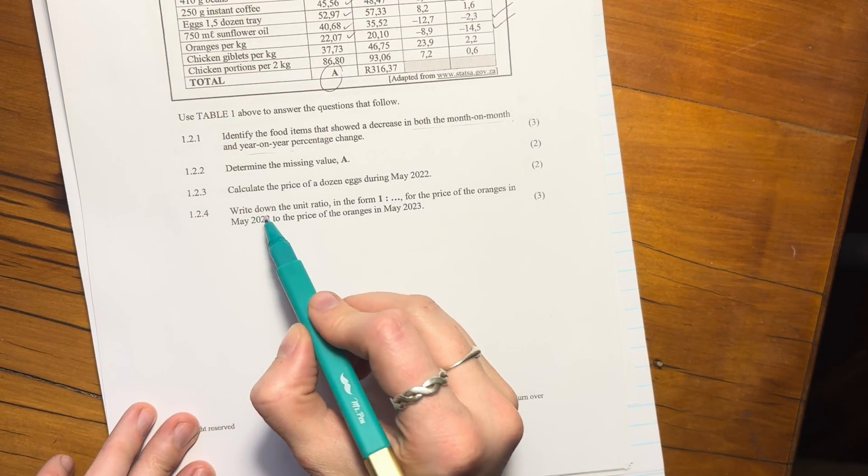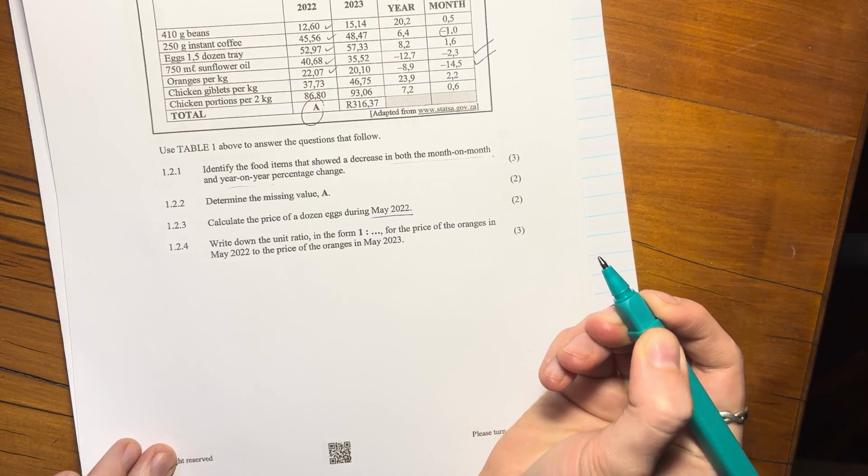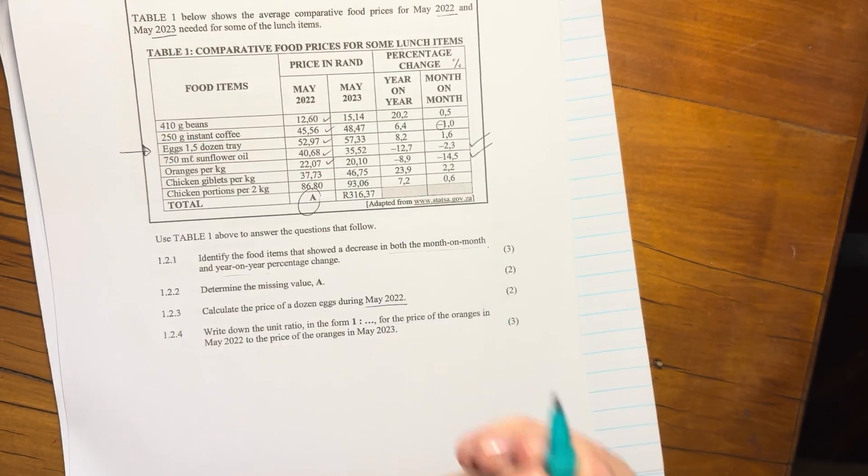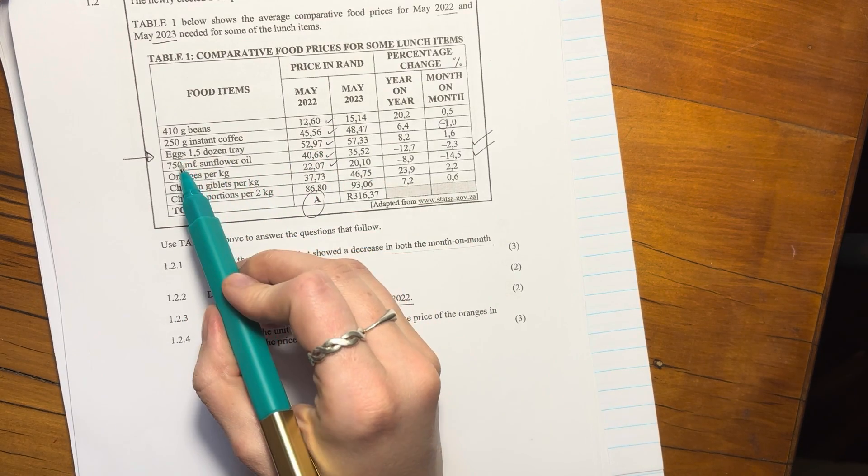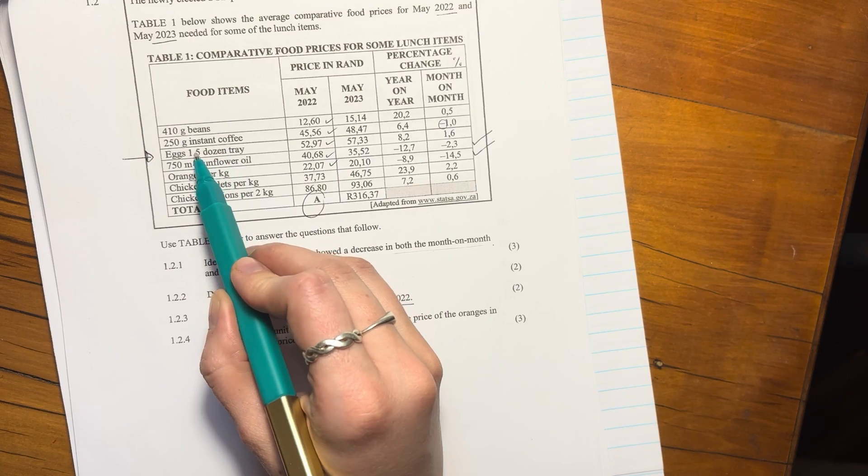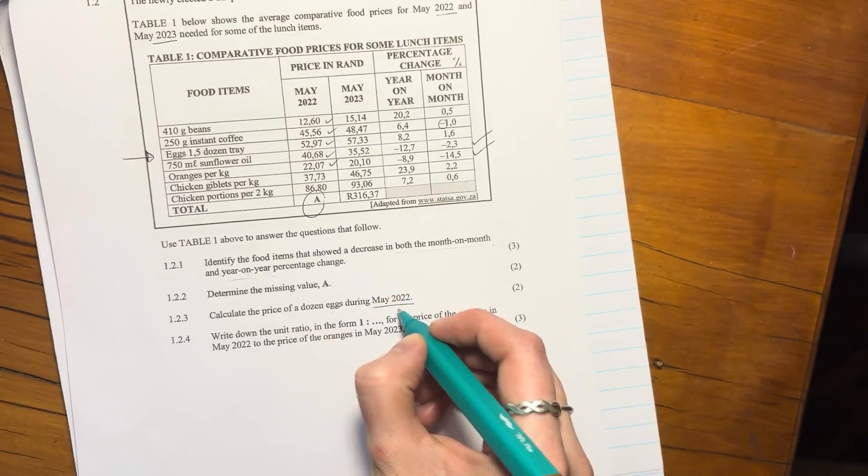Let's look at this question. Calculate the price of a dozen eggs during May 2022. So let's look over here. Here's eggs. Now it says your eggs, one and a half dozen. So that is obviously more than a dozen. So we're going to have to do some division. We know that. But it said May 2022, so that's our May 2022 price.